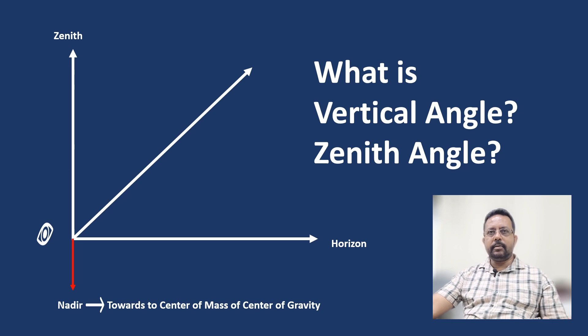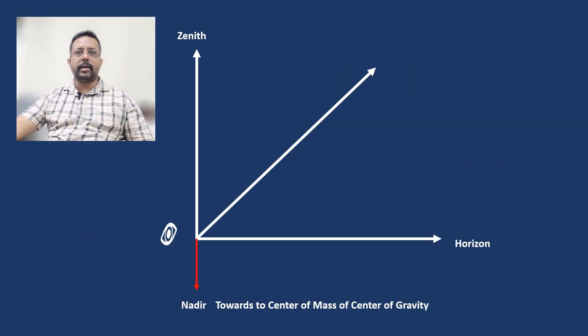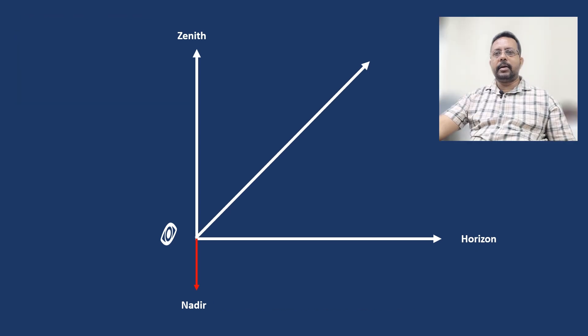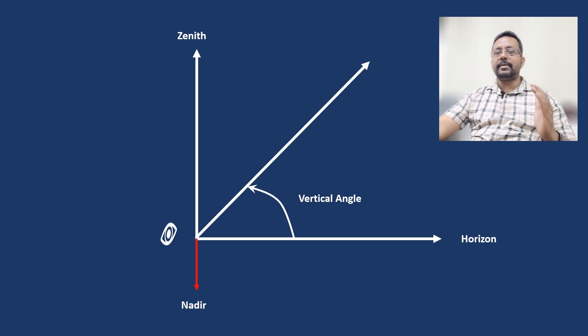Now in my screen, I have a horizon, a zenith which is directly above, and nadir which is directly towards the center of mass or center of gravity. The vertical angle is measured from the horizon, and the zenith angle is measured from the zenith. It's as simple as that.